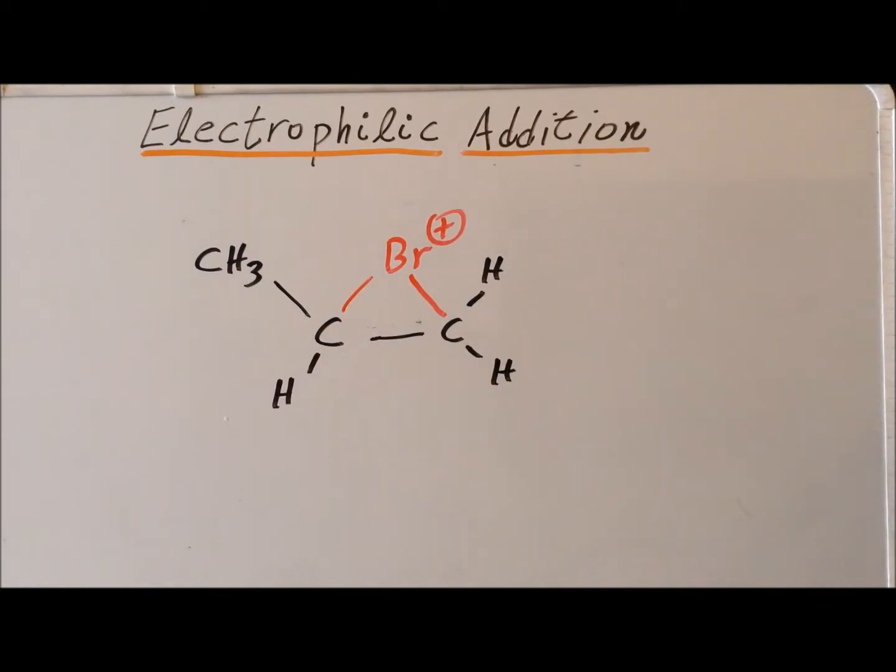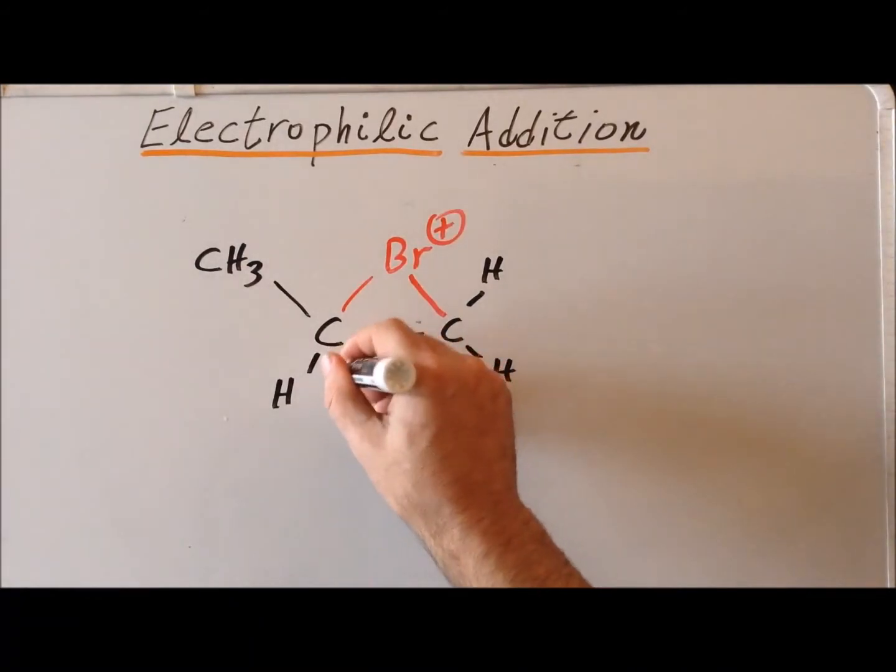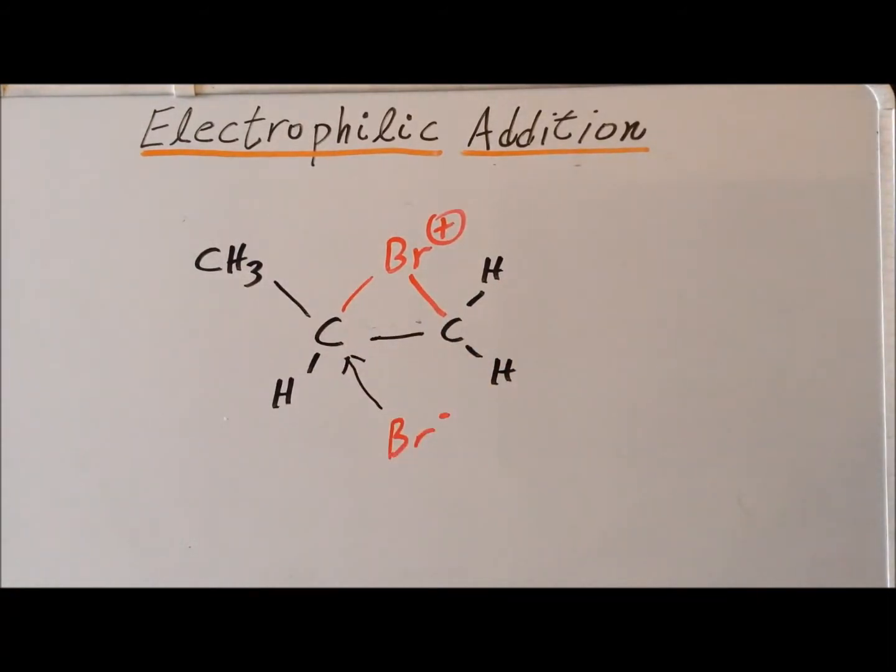Then in the next step, we have nucleophilic attack of bromide, where we would expect it by Markovnikov's rule at the secondary carbon.